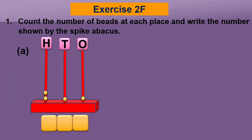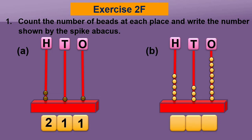Exercise 2b: count the number of beads at each place and write the number shown by the abacus. How many beads in the ones spike? Yes, one — so write one in the ones place. There is one bead in the tens spike, so write one in the tens place. There are two beads in the hundreds spike, so write two in the hundreds place. The number is two hundred eleven.